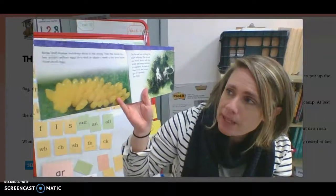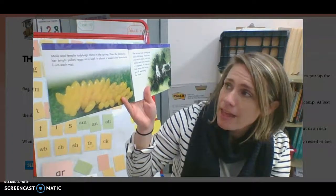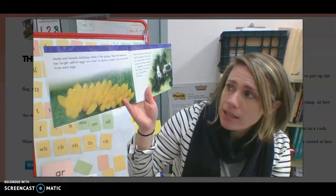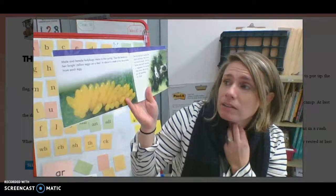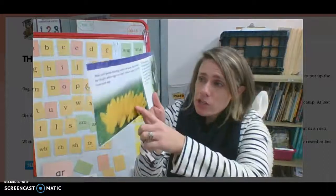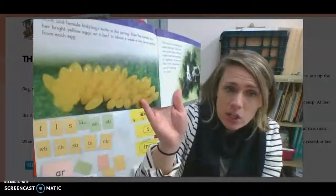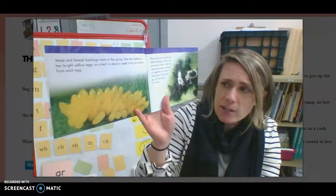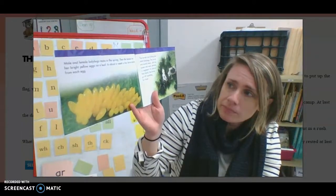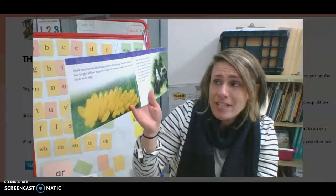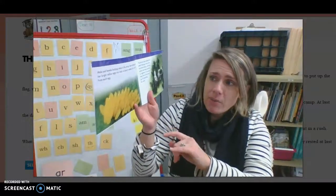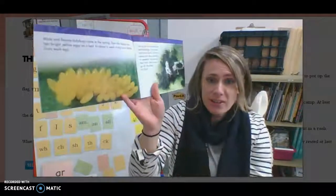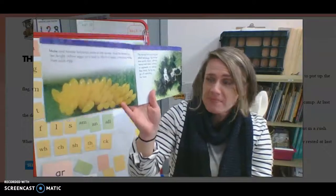Male and female ladybugs mate in the spring. Then the female lays her bright yellow eggs on a leaf. In about a week, a tiny larva hatches from each egg. Wow, can you visualize them hatching out of there? What's that going to look like? Make that pretend movie. What did you learn from that page? I learned I didn't know that ladybug eggs were bright yellow like that. That's pretty. When I get eggs at the grocery store, they certainly don't look like those eggs.